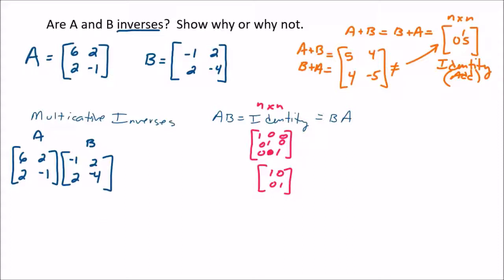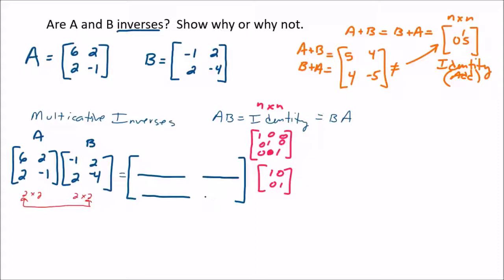When we multiply a 2×2 matrix times another 2×2 matrix, the resulting matrix is going to be 2×2 — the first dimension of A by the second dimension of B. That's a good start because the identity matrix has to be square. If one of these wasn't a square matrix, we'd know right away they can't be inverses of each other. Our result will have four entries: row one column one, row one column two, row two column one, and row two column two.